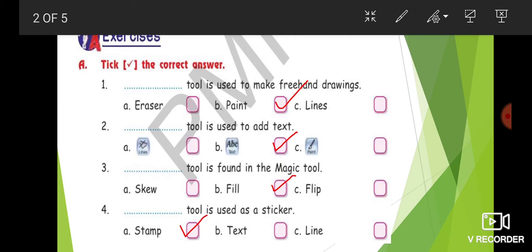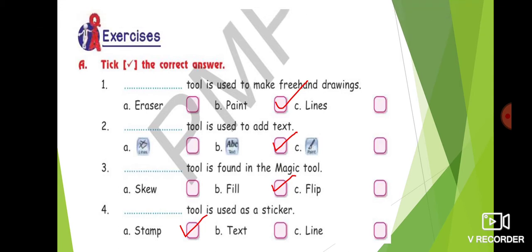Let's review the answers. For freehand drawing, the answer is paint. For adding text, the answer is ABC text. For the tool found in magic tool, the answer is fill. For the tool used as a sticker, the answer is stamp. These are the answers for Exercise A: tick the correct answer.